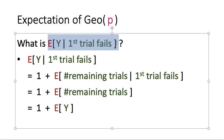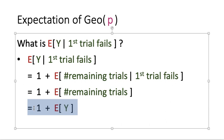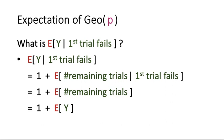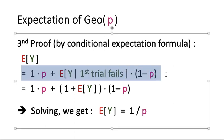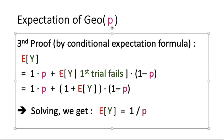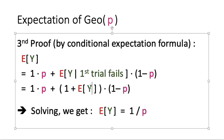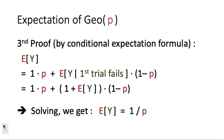So originally we knew nothing about this conditional expectation, but now we can express it as 1 + E[Y]. Substituting back: E[Y] = 1·p + (1 + E[Y])·(1-p). This gives us one equation with one unknown. Solving this equation, we find E[Y] = 1/p. So we now have a third proof for the expectation of the geometric random variable with parameter p.